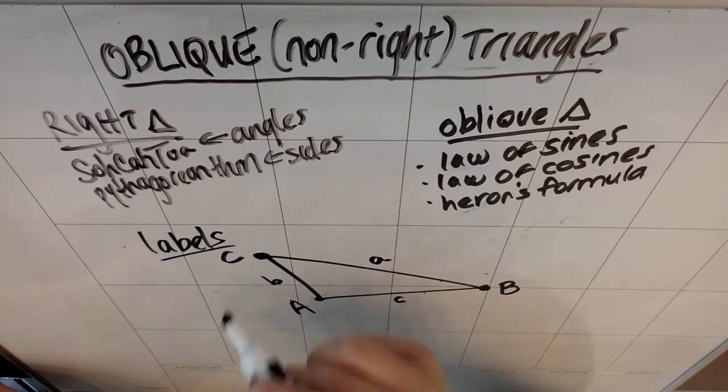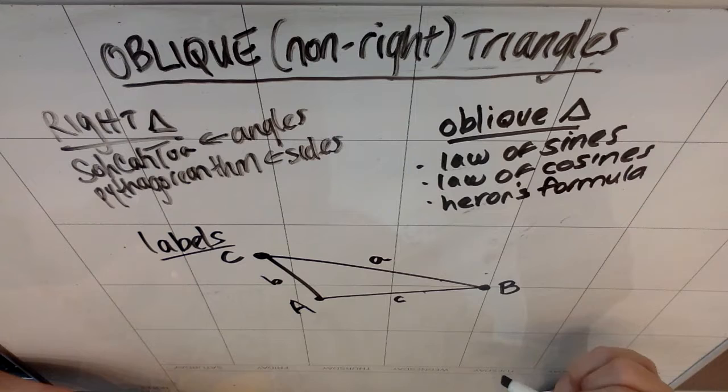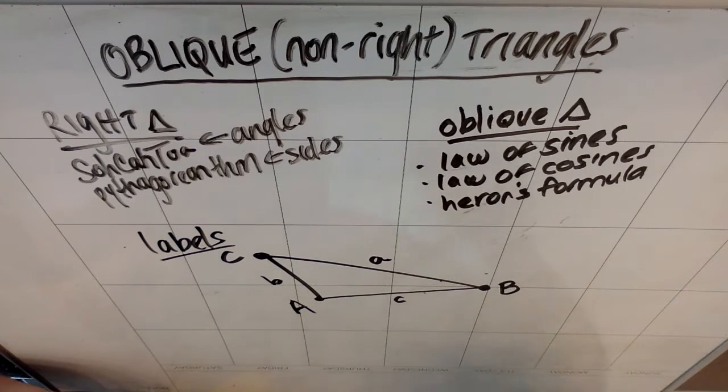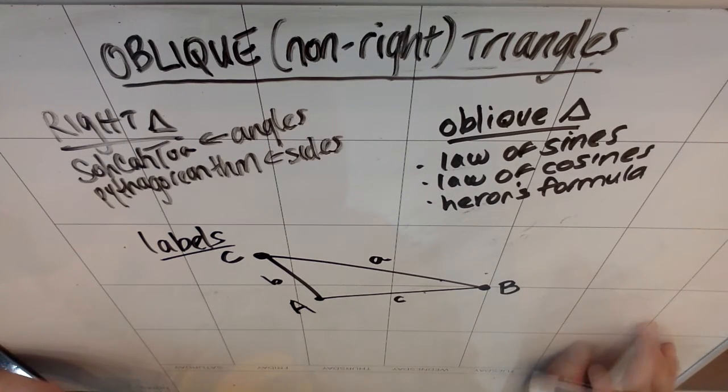So that's the first piece of information that we need to be aware of. So big A, big C, and big B are the angles. Little a, little b, and little c are the sides.